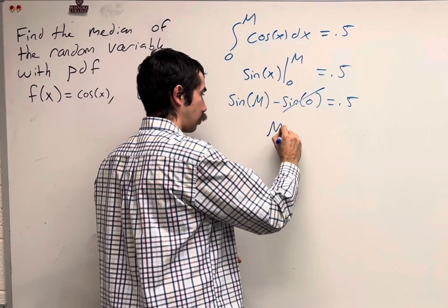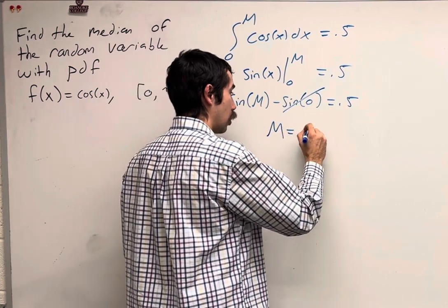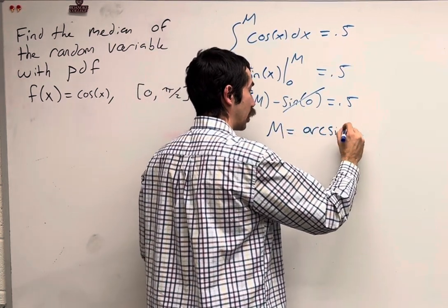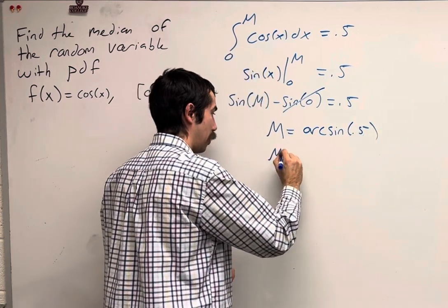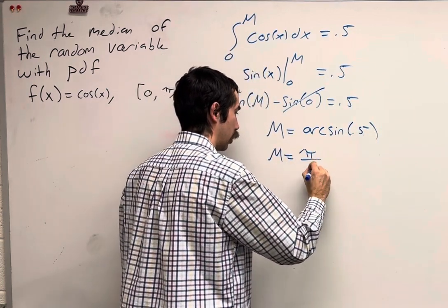Or m is equal to arc sine, or the inverse sine of 0.5, meaning m is pi over 6.